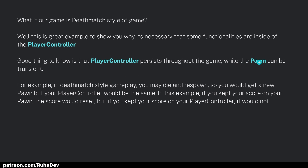For example, if we put the player's score inside the Pawn, once we destroy that Pawn the score is going to be reset to zero. But if we keep the score inside the Player Controller and the Pawn gets killed and respawned, we will still maintain the player's score. So the key thing to know is that the Player Controller will persist through the game and the Pawn won't.